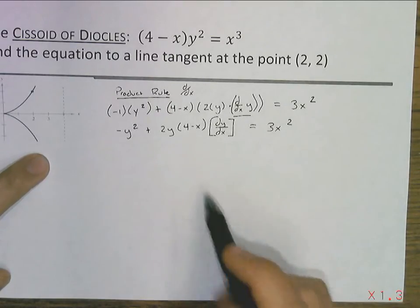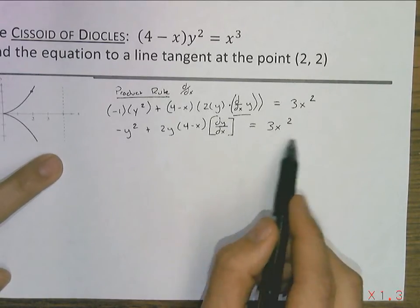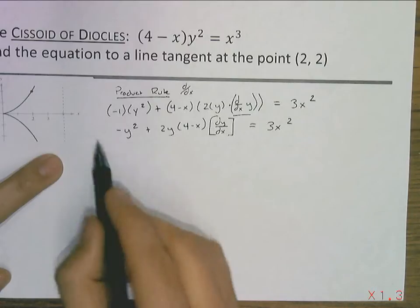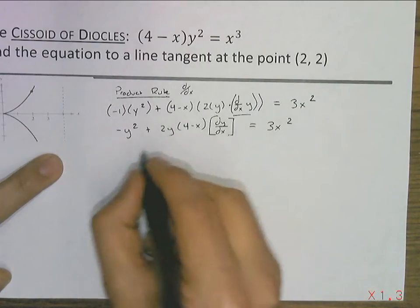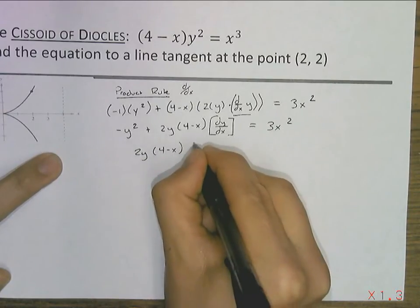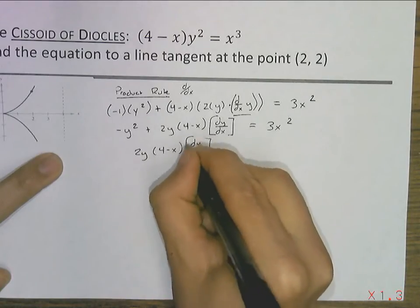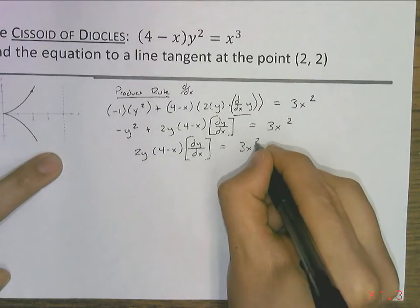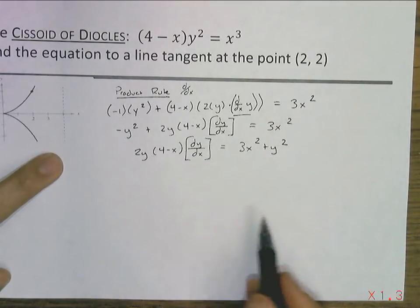So, right here is where we want to start getting this dy/dx by itself. Because this is the slope and we want it solved explicitly for that slope. So, the first step is I'm going to undo the addition and subtraction first before I undo multiplication. So, I'm going to keep all of this stuff on this side. So, 3 times x squared and we're adding y squared to both sides.